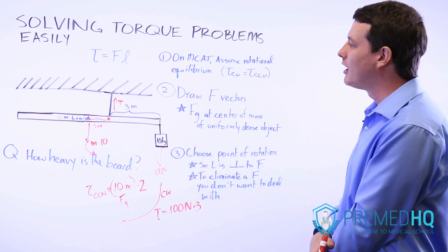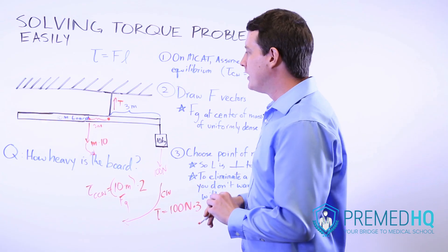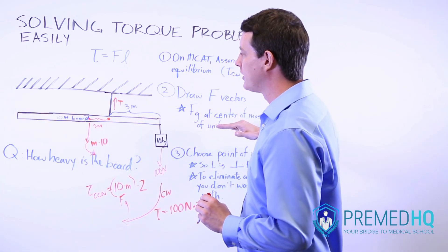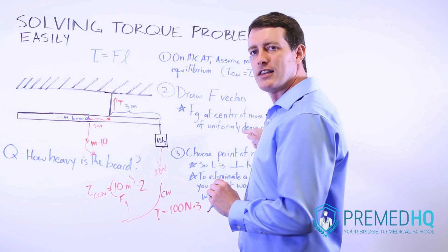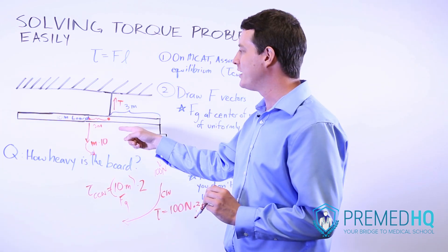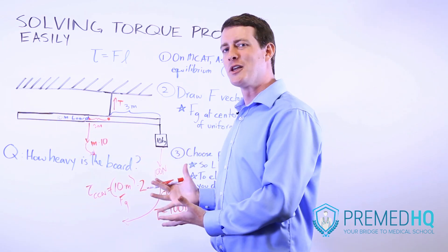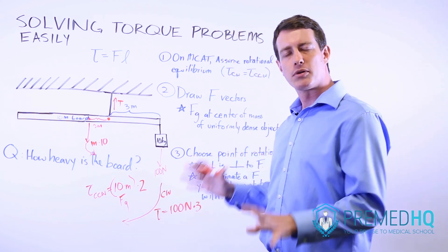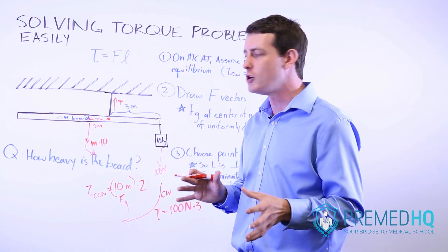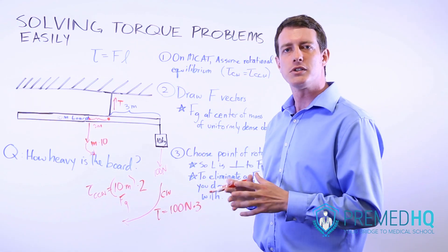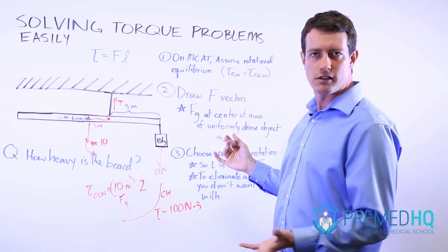The trickiest part of this problem was figuring out where to place the point of rotation. We drew the force vectors, identified that we needed a point of rotation allowing lever arms perpendicular to those vectors — placing it on this plane — and chose a point right underneath the force we least wanted to deal with, which wasn't the unknown we're solving for. Once we figured that out, the actual problem becomes fairly straightforward, and this is how you'll always approach an MCAT or practice question bank torque problem.